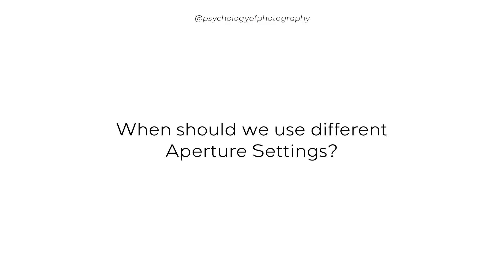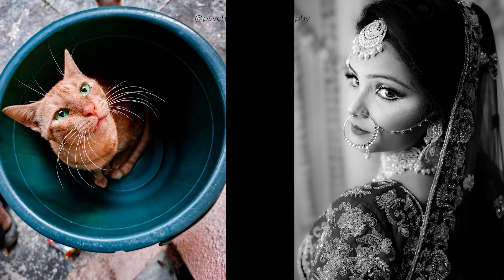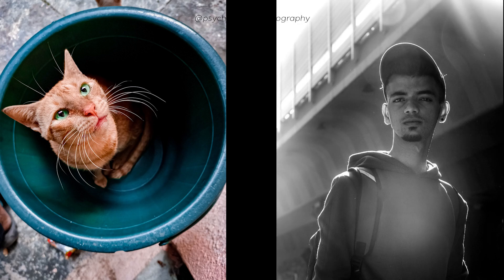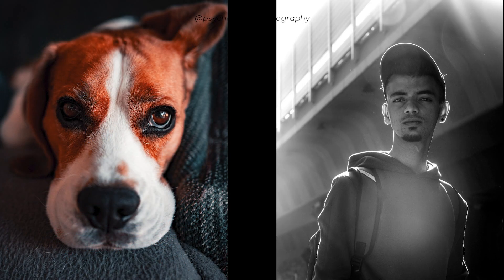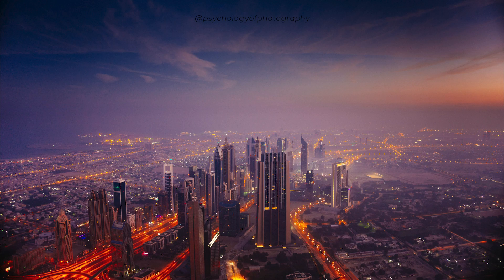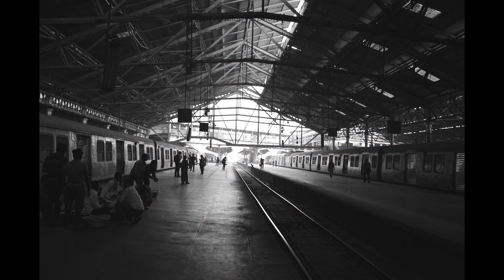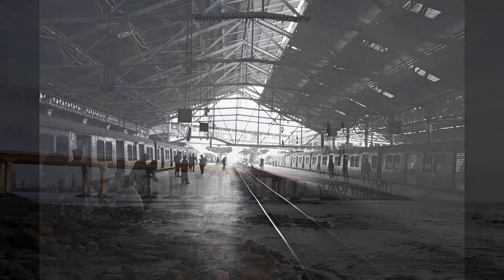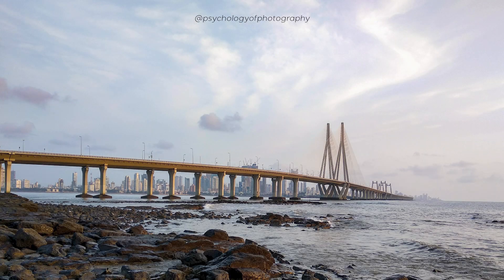When should we use different aperture settings? If you want to isolate your subject and make them stand out against a blurred background, use a larger aperture or a lower f-stop number. If you want a deep depth of field where the background is also in focus, use a smaller aperture or a higher f-stop number. If you are shooting in low light, use a larger aperture and lower f-stop number to let more light in.